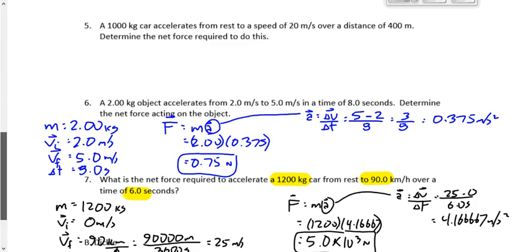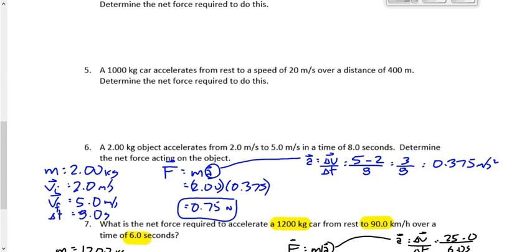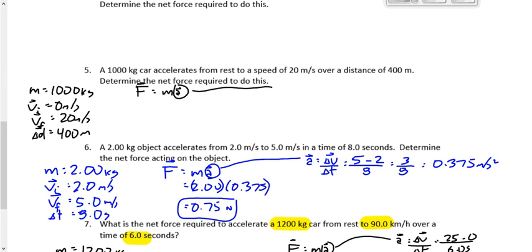We've got a request to go over number five, so we'll do that one as well. This is a 1,000 kilogram car accelerates from rest to 20 meters per second over a distance of 400 meters. What's the net force required to do this? My mass is 1,000 kilograms. VI is zero meters per second. This time we don't have to worry about converting, just 20 meters per second for my final speed. And my distance is 400 meters. We're looking for the net force. So we're going to say F is equal to M times A. But we've got to find A. This time it's not going to work to say delta V over delta T. Which of the group B equations do we want to use?